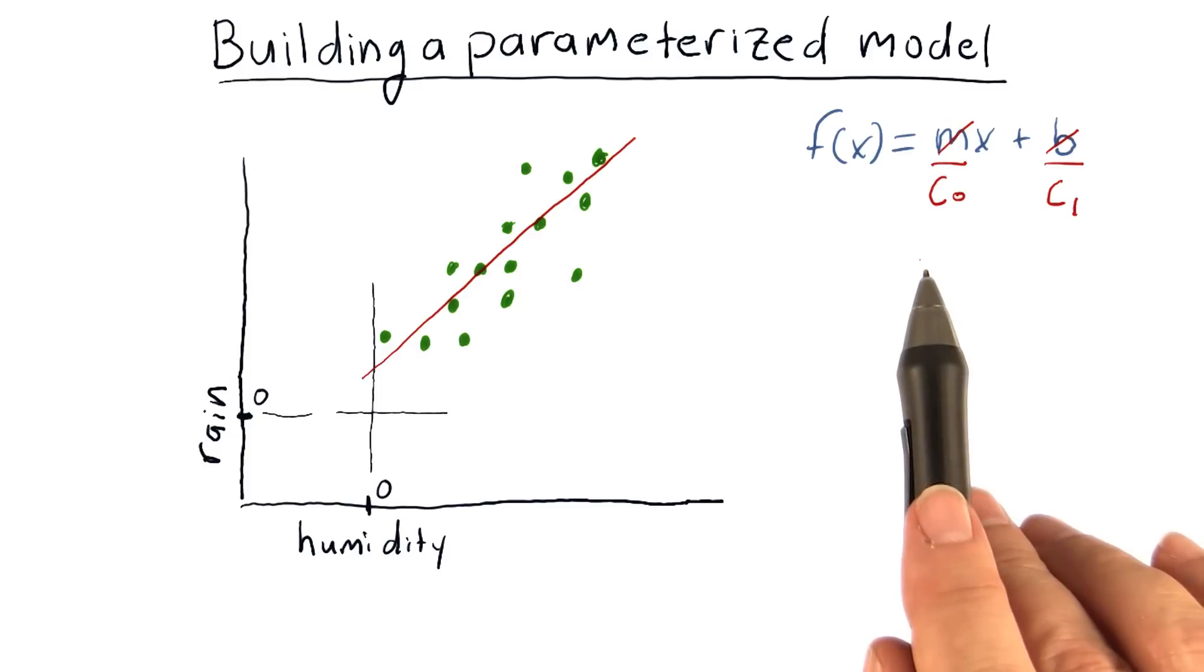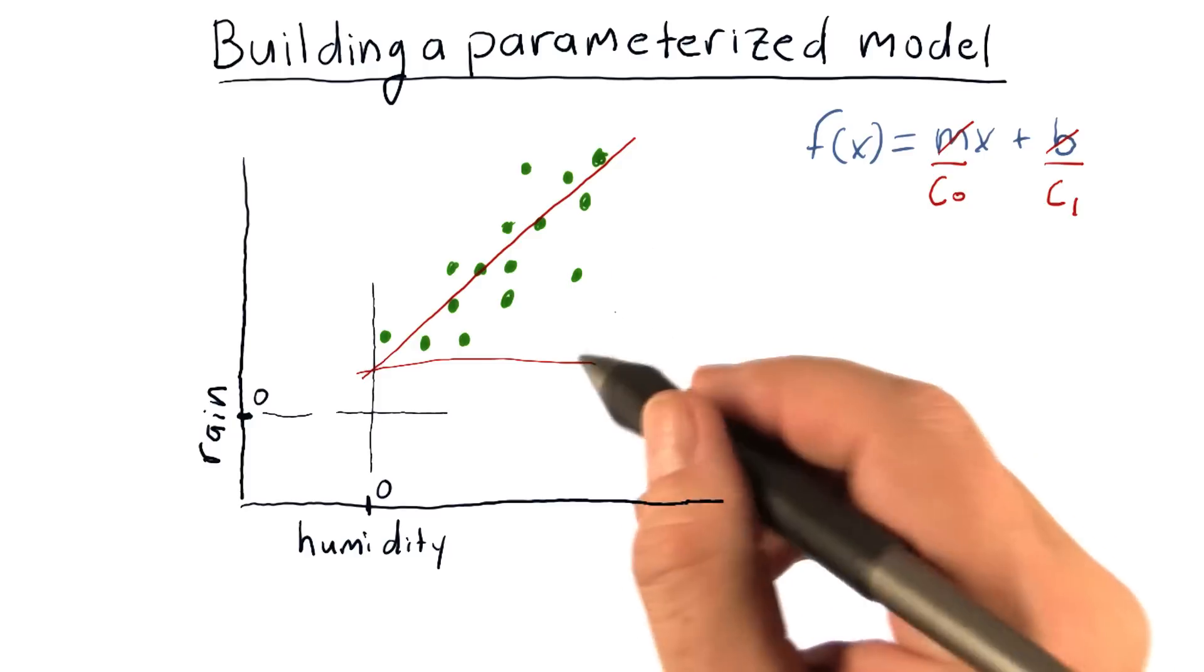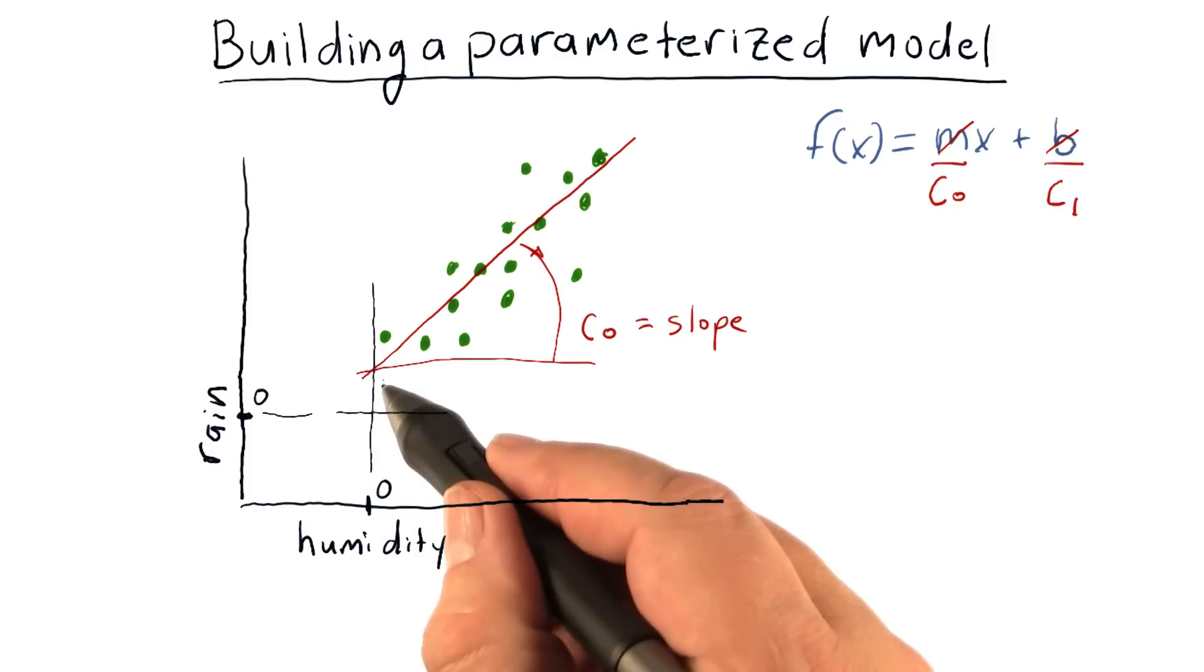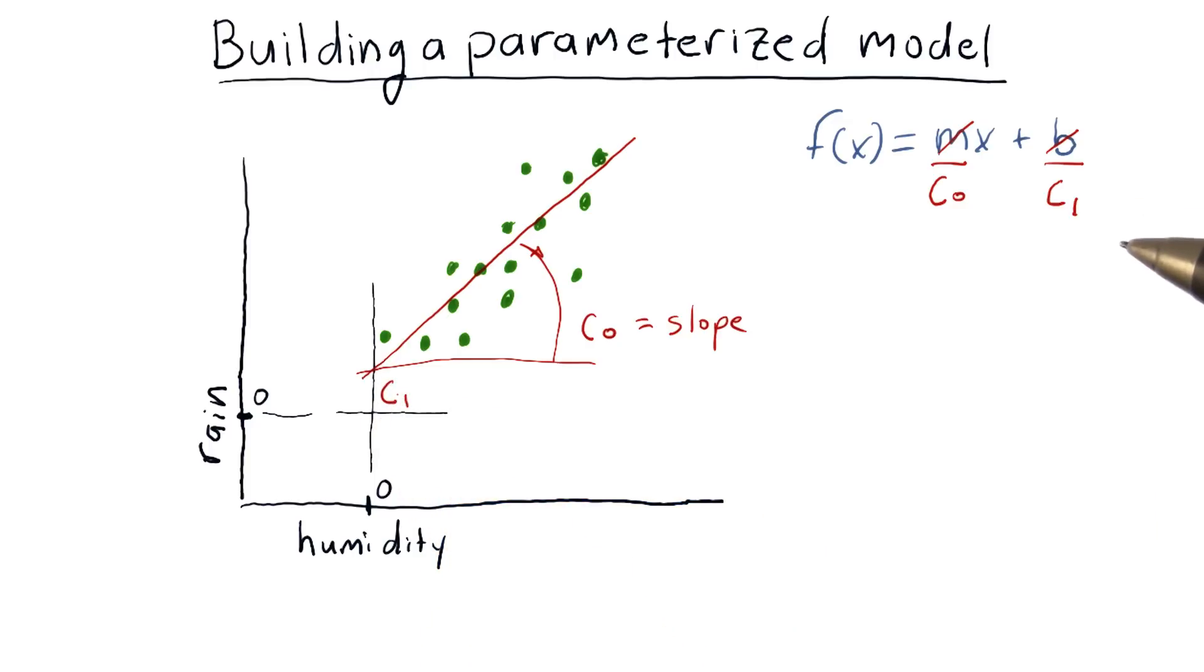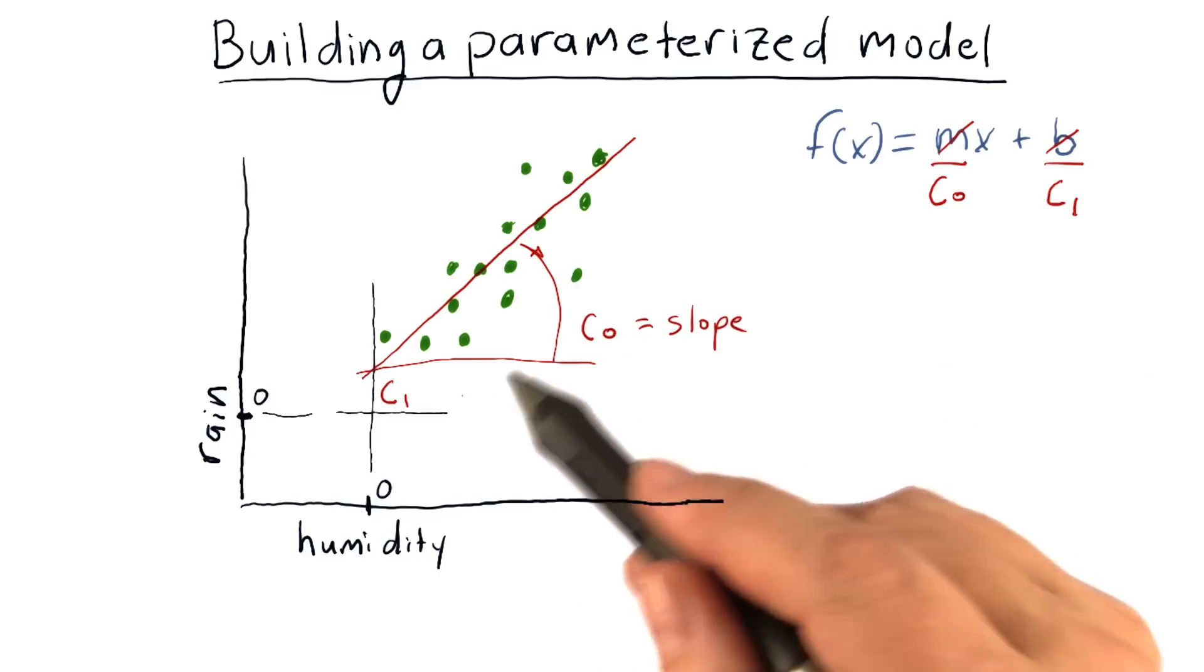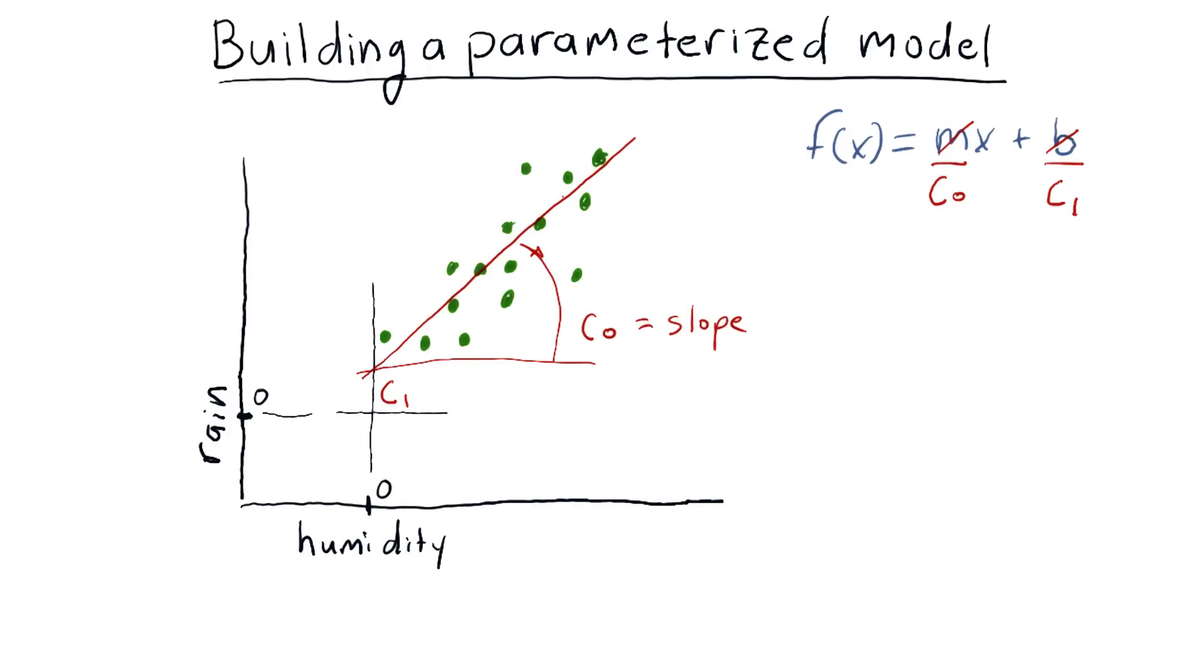And so our parameters here, coefficient 0 is equivalent to the slope here. And coefficient 1 is the y-intercept. So our task is to find c sub 0 and c sub 1 that provide the equation for this line that best fits the data.